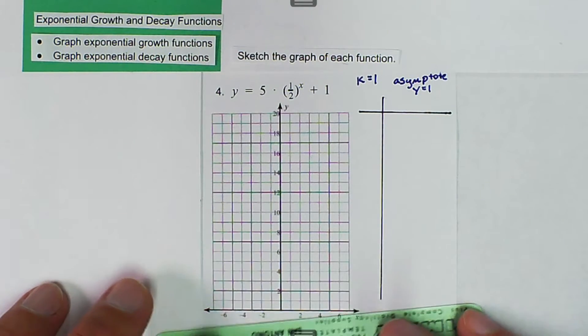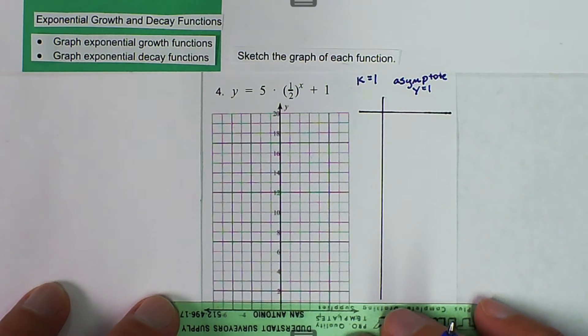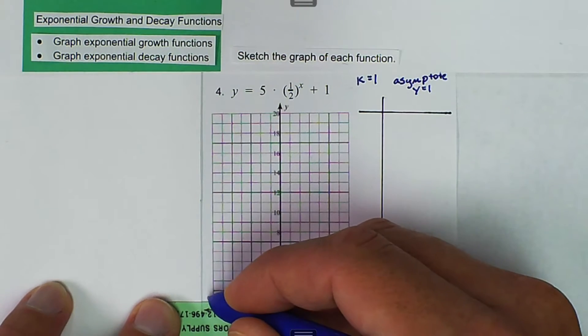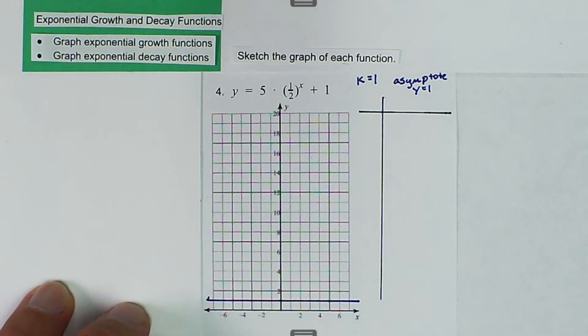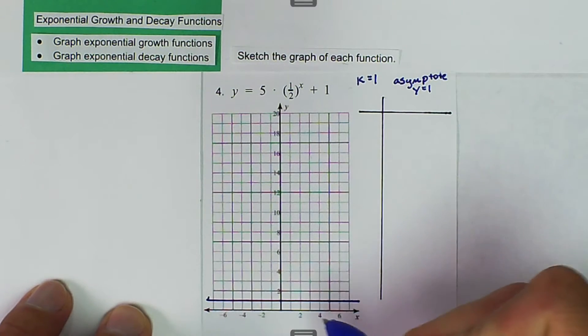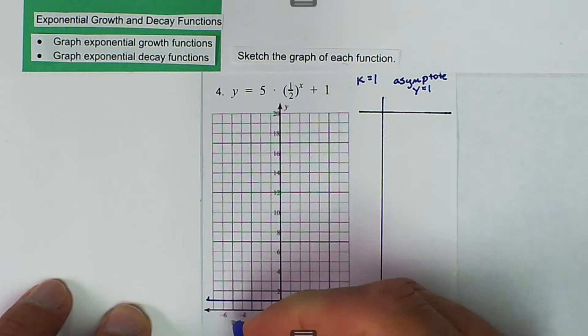So we can graph that, y equals 1, which would be right down here. Normally, in our parent function, our asymptote is 0, so this one shifted up 1. So this is going to be y equals 1.